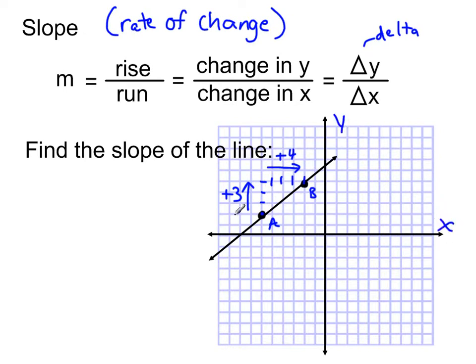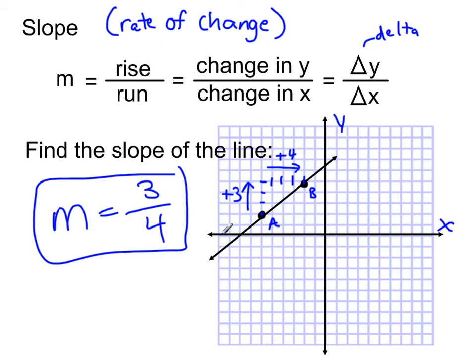So my slope of the line, M, which denotes slope, is equal to 3, the rise, over 4, the run. So there's my slope. And that's how we find the slope using a graph. Now, there's other ways we can do it. Sometimes we can use points.